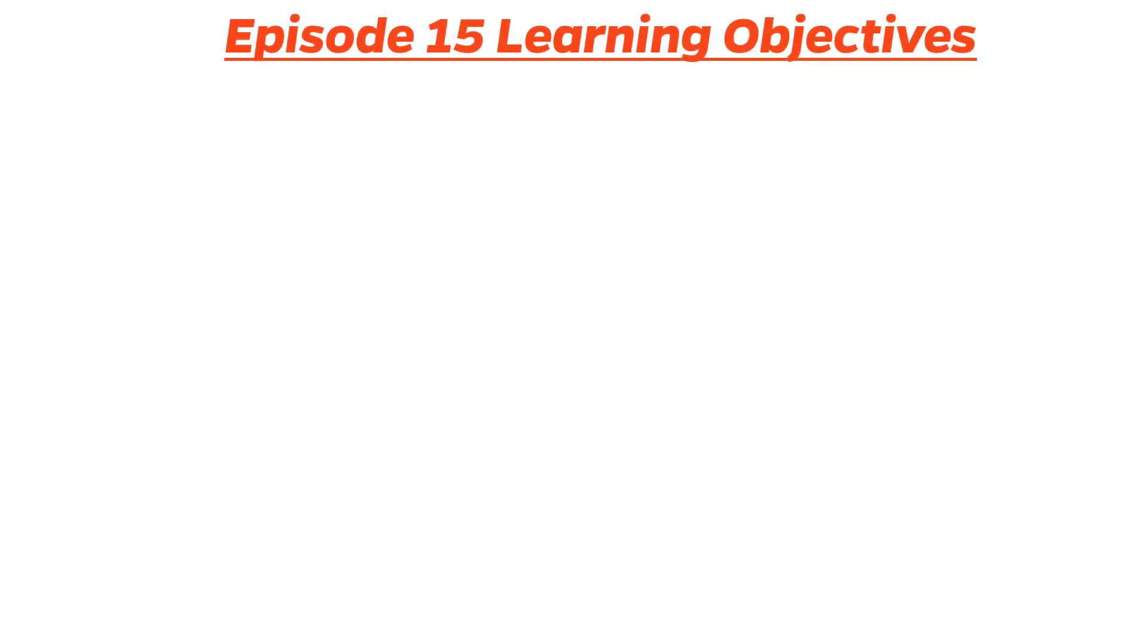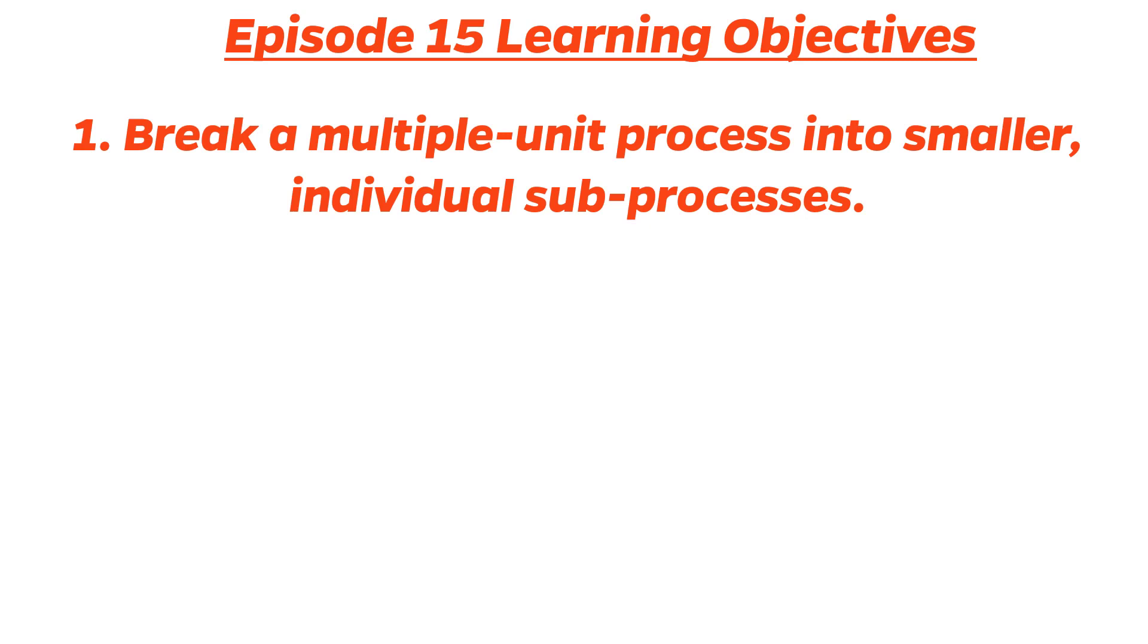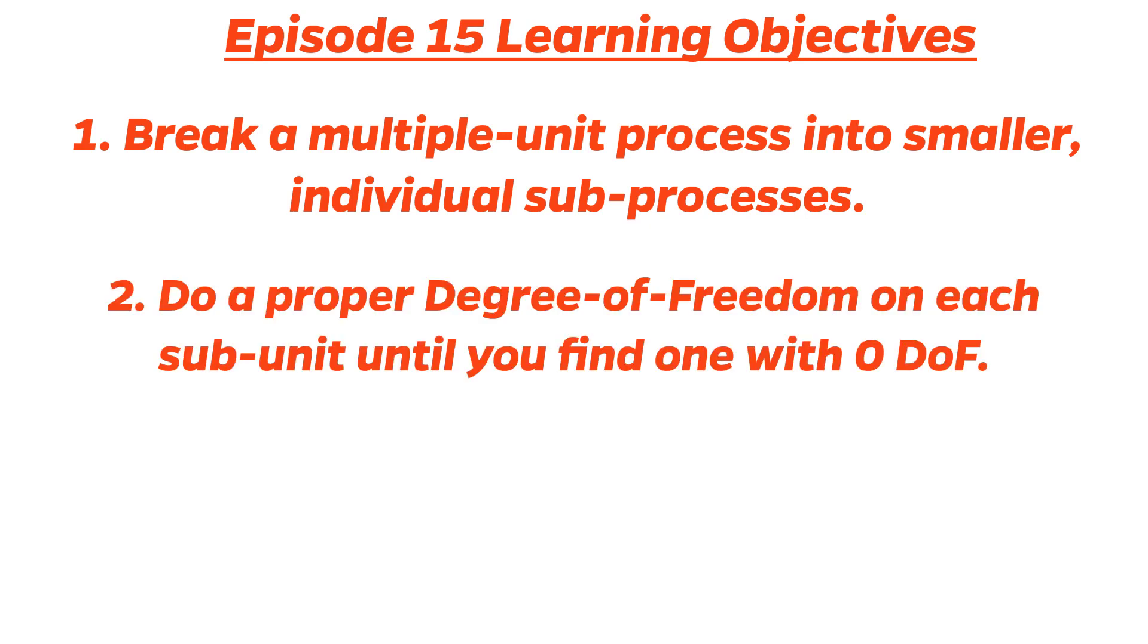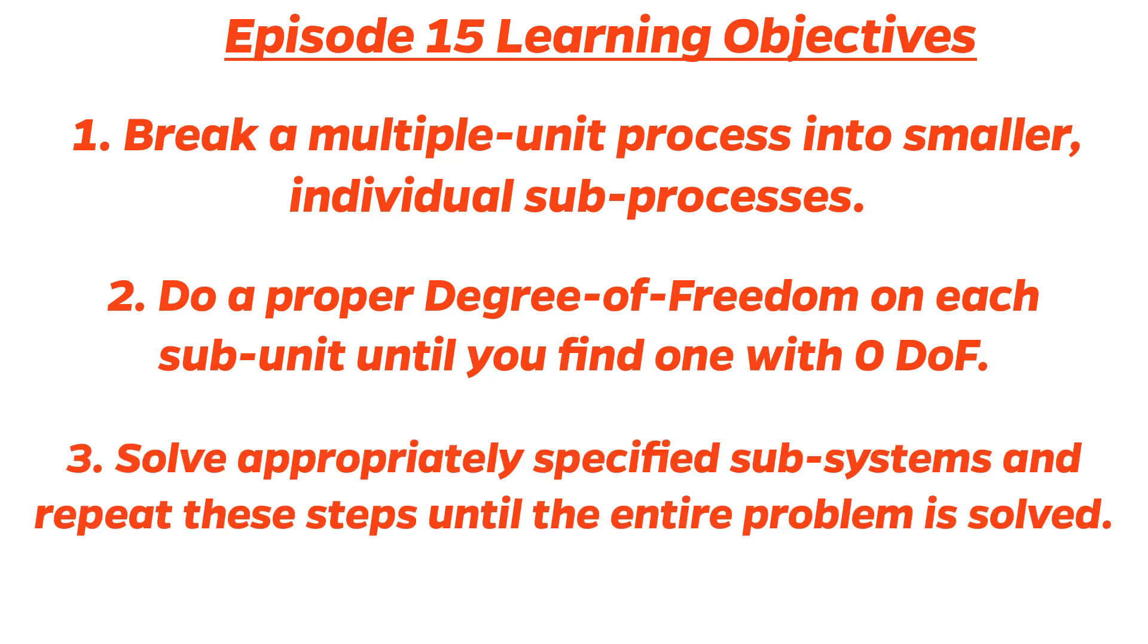Episode 15 learning objectives. Now that this episode is over, you should be able to: 1. Break a multiple unit process into smaller individual sub processes. 2. Do a proper degree of freedom analysis on each subunit until you find one with zero degrees of freedom. 3. Solve appropriately specified subsystems and repeat those steps until the entire problem is solved.